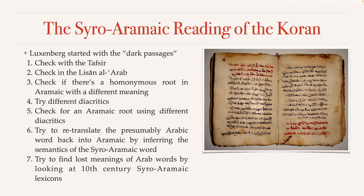In step four, he goes back to assuming the word is Arabic in nature, but now assumes the diacritics — the little dots — are wrong. He moves them around to see what other words he could find. Very often, he found that Arab readers had misread the proper Arabic word and added wrong diacritics. But often enough he doesn't find anything either, and proceeds to step five.